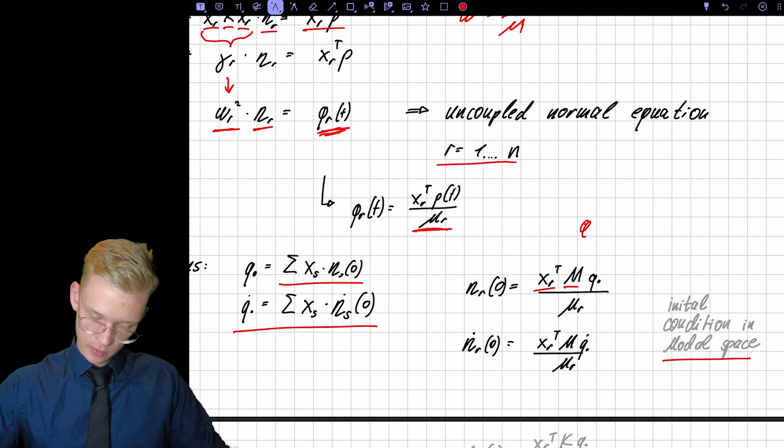So we have, we pre-multiply, we have our Q, we pre-multiply with M, pre-multiply with XR transpose. So we have to do the same thing for the right side. We have XR transpose M sum XR nu S. This sum goes away.